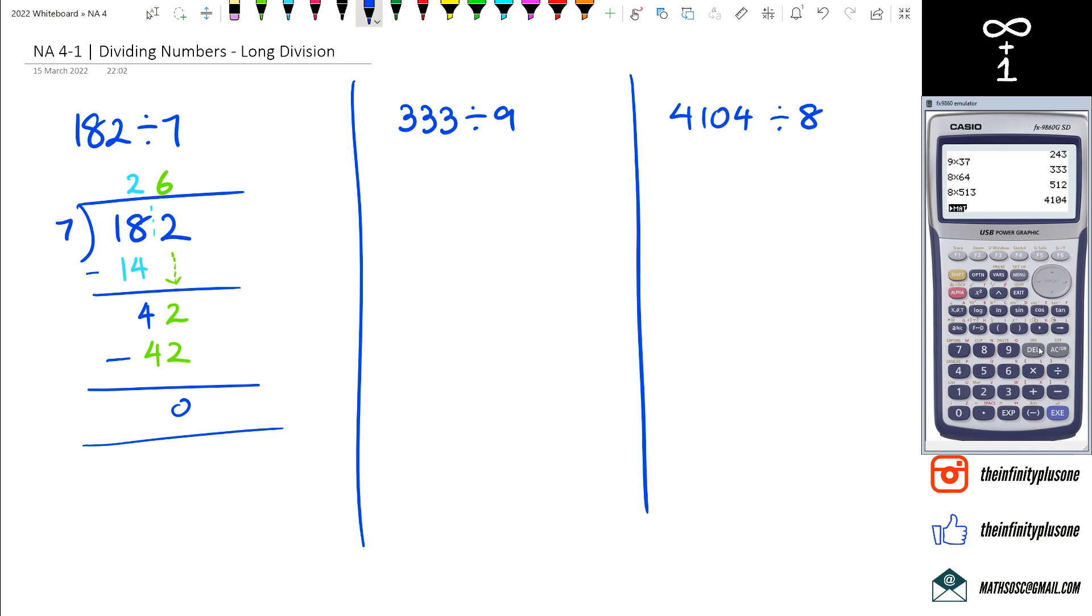Which means 182 divided by 7 is actually equal to—not 17—182 divided by 7 is equal to 26. Now of course, you might decide to go, 'okay, I want to split this up into 140 and 42.'